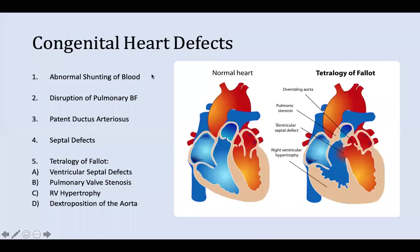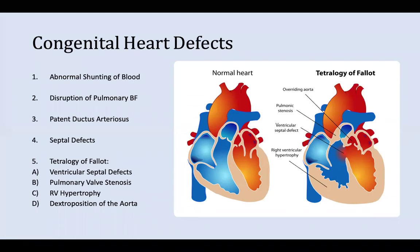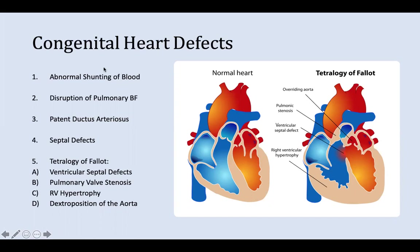Congenital heart defects usually arise in the fourth to seventh week of the gestational period from a mixture of genetic and environmental influences. The main aspect is abnormal shunting of blood — either from the arterial to the venous system (left to right) or from the venous to the arterial system (right to left), determined by the presence, position, and size of the abnormal opening. Blood moves from higher to lower pressure regions: if pulmonary vascular resistance is higher, blood moves right to left; if it falls below systemic circulation, there's a left to right shunt.